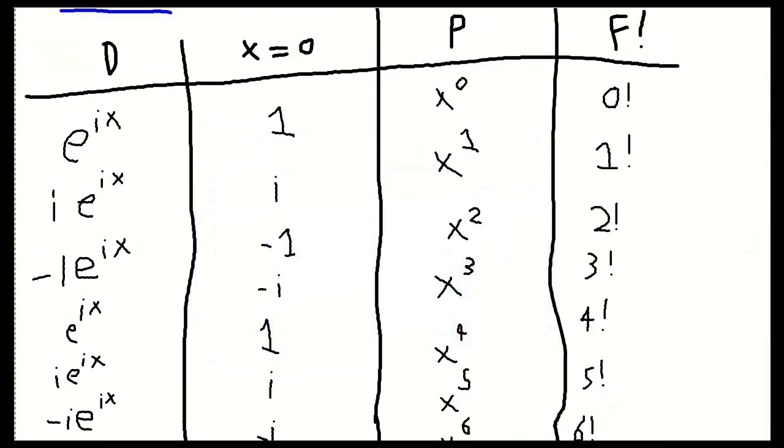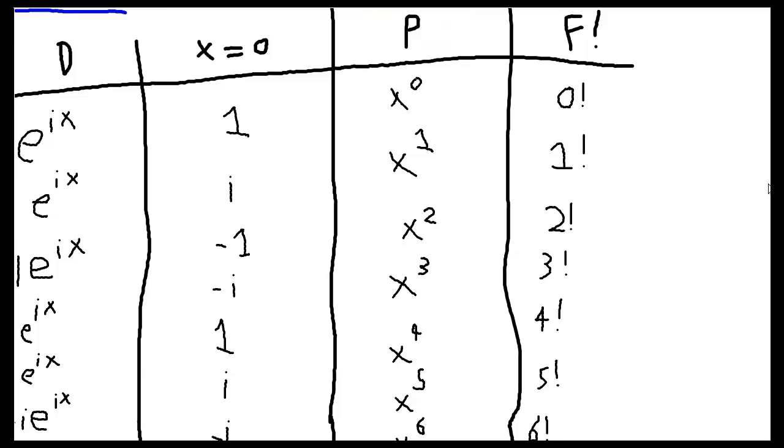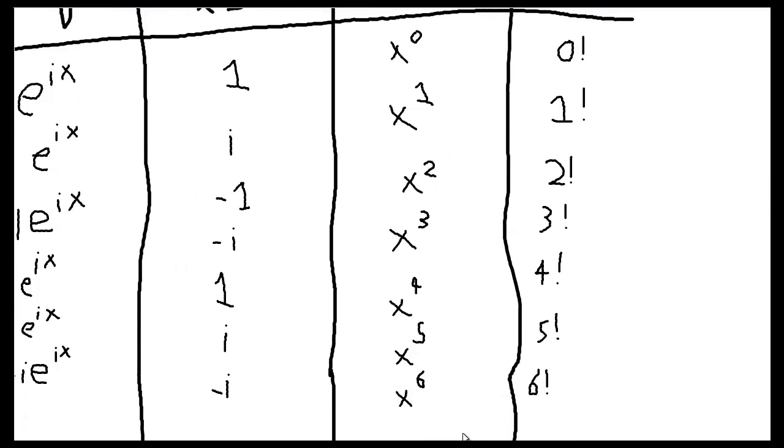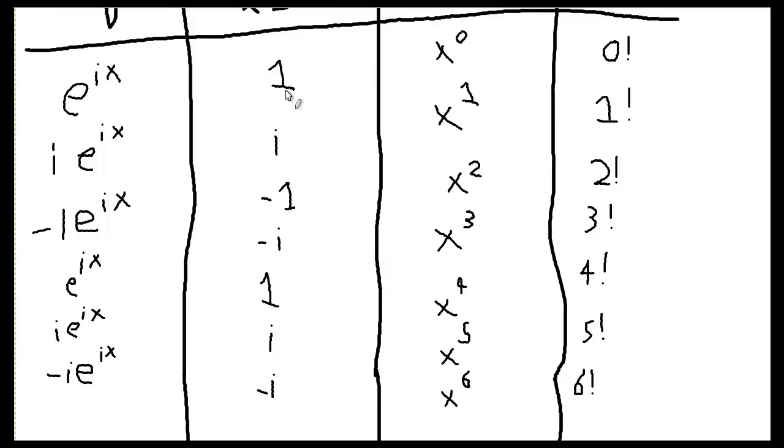So basically, what happens here is it's going to alternate through all the powers of i. See, i to the 0 is 1, i to the 1 is i, i squared yields negative 1, i cubed is negative i, and so on. And it just continues through that pattern.